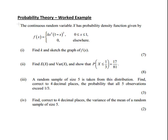In this presentation we're going to look at probability theory. The continuous random variable X has probability density function given by f(x) equals kx²(1-x)² where x is between 0 and 1, and elsewhere it's 0. Find k and sketch the graph of x.